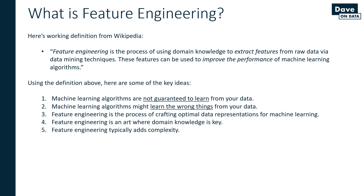Feature engineering typically adds complexity. Typically what you're doing is not a one-for-one exchange from a less optimal to a more optimal representation — you're actually adding more features to your data set, more columns to your data frame. As we know from CART, that can increase the complexity of the model. The more features you have, depending on what hyperparameters you're using for the bias-variance trade-off, your trees are typically going to be larger, especially if those features are predictive.